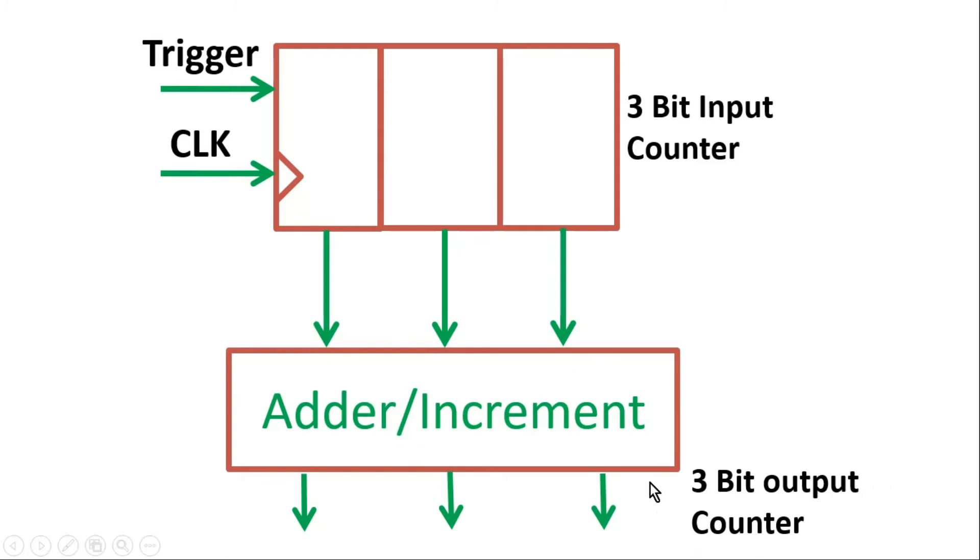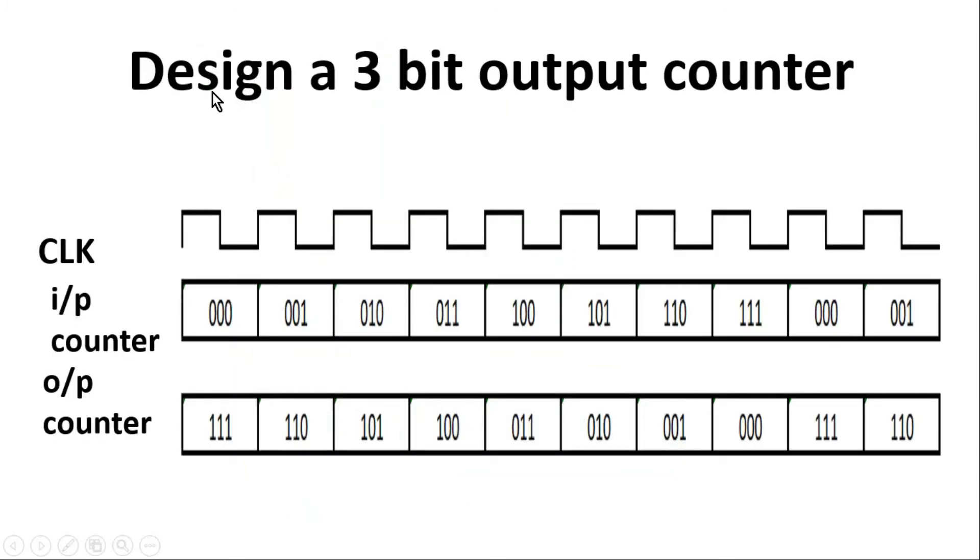In the second question also, you have to design a 3-bit output counter and the input is same as illustrated in the previous example. You have a clock signal and an input counter. The input counter is running from 000 to 111 and then rolls back to 000 and keeps on running like this.